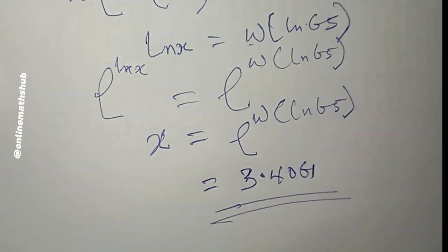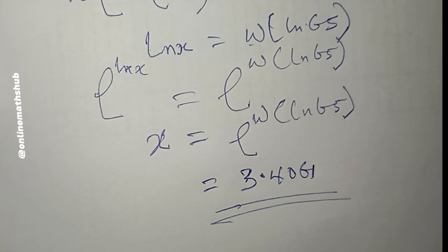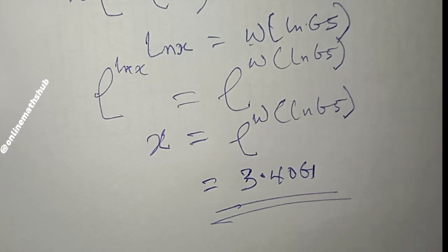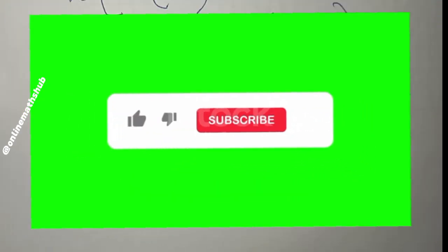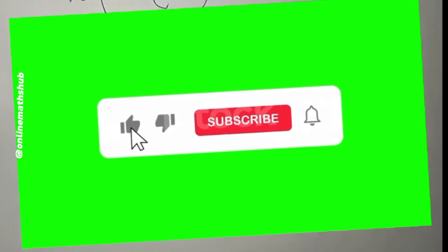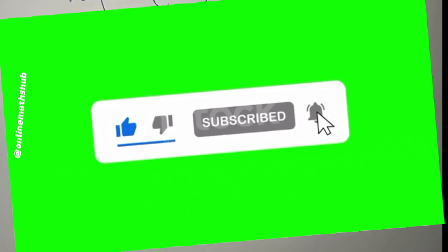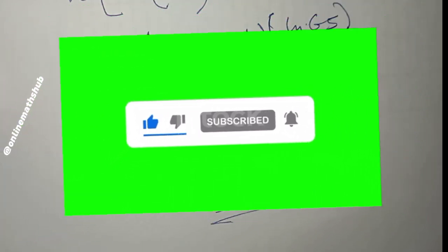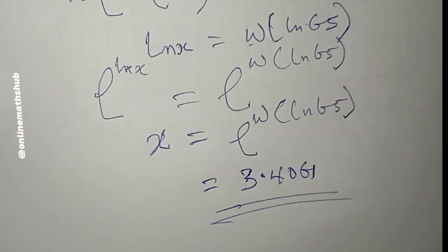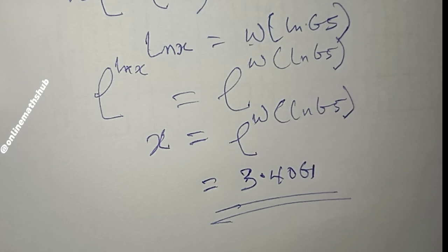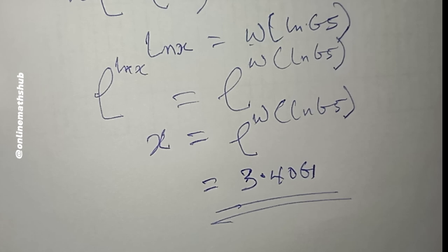So x ≈ 3.4061 is the approximate value. That's how you solve a problem like this. Let me have your thoughts in the comment section. Hit the like button, subscribe to our channel, and turn on the notification icon. Share the video with your friends, and I'll see you in my next video — bye!